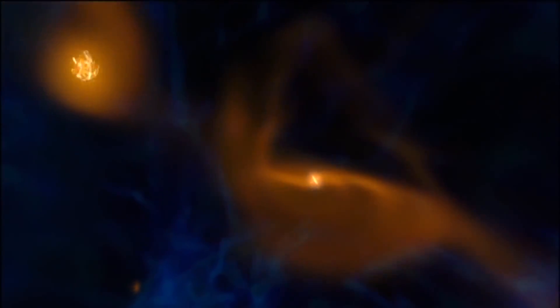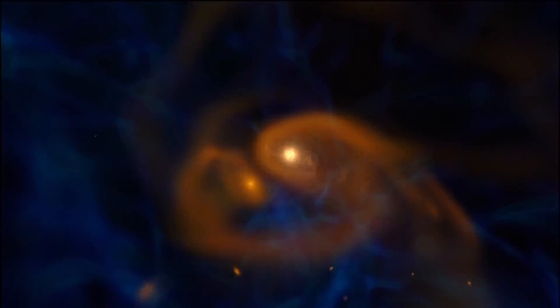This simulation shows how a galaxy like our own might have taken shape in a flurry of mergers and collisions. In the beginning, gravity drew patches of stars and gas together. A new, larger patch drew still others.